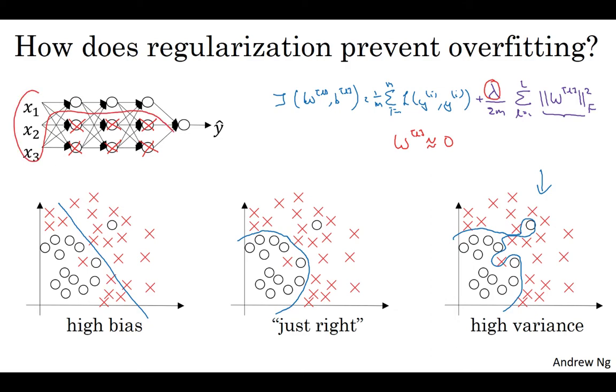And if that's the case, then this much simplified neural network becomes a much smaller neural network. In fact, it's almost like a logistic regression unit stacked multiple layers deep. And so that will take you from this overfitting case much closer to the left toward the high bias case. But hopefully, there'll be an intermediate value of lambda that results closer to this just right case in the middle.